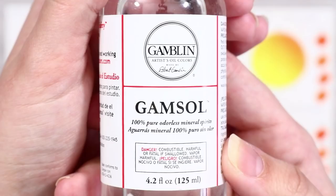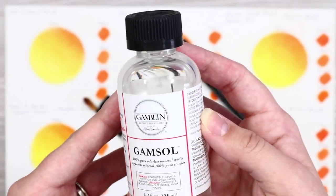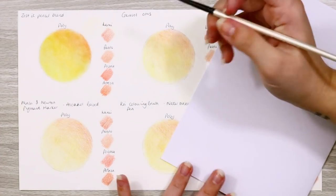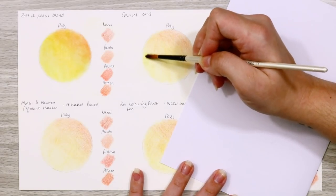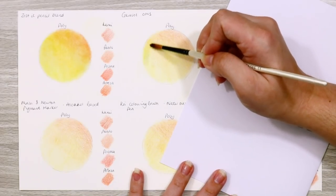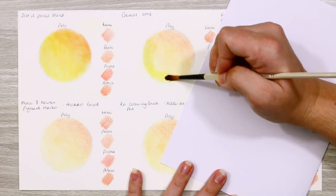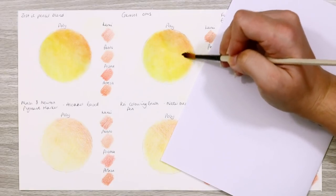Next up is Gamsol odorless mineral spirits. This is applied in exactly the same way as the Zest It, so just load up your brush and blend away. The only difference with this product is that it doesn't have that citrusy smell, which I actually find more appealing. The Zest It never used to have any sort of effect on me, but that citrus smell is just so overpowering for me now. Not much to say about the result from the Gamsol, it's an awesome blender and again you can't really fault it.